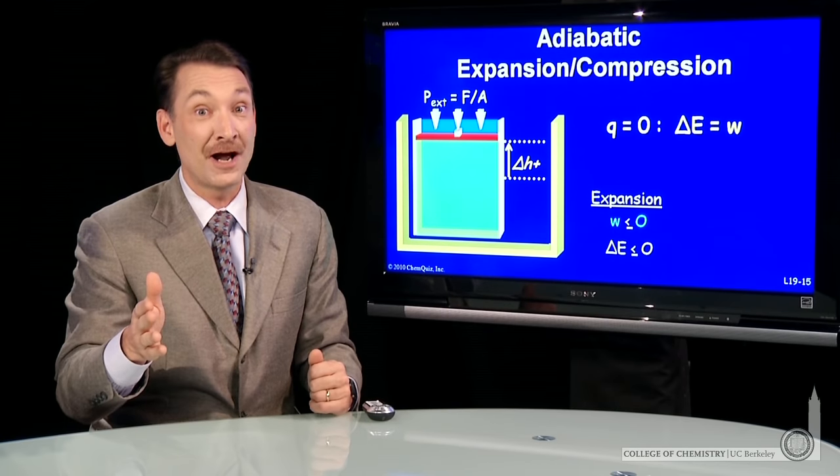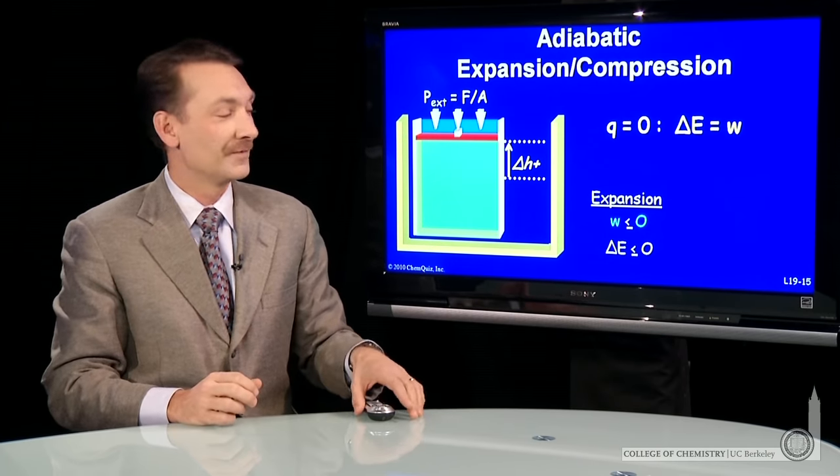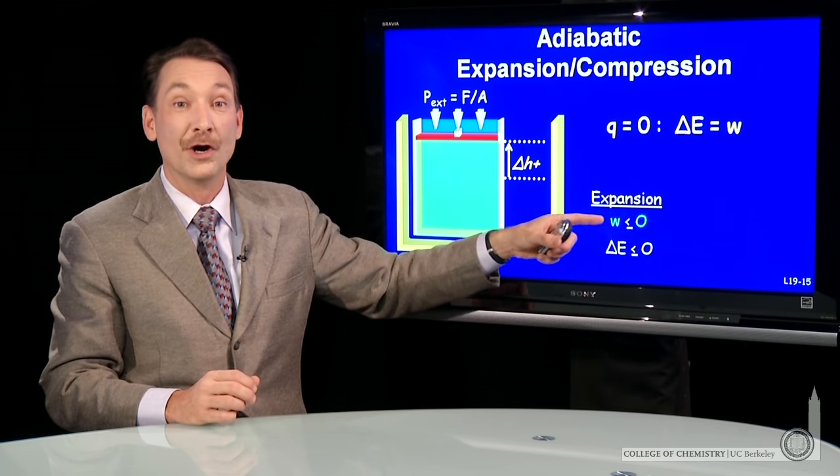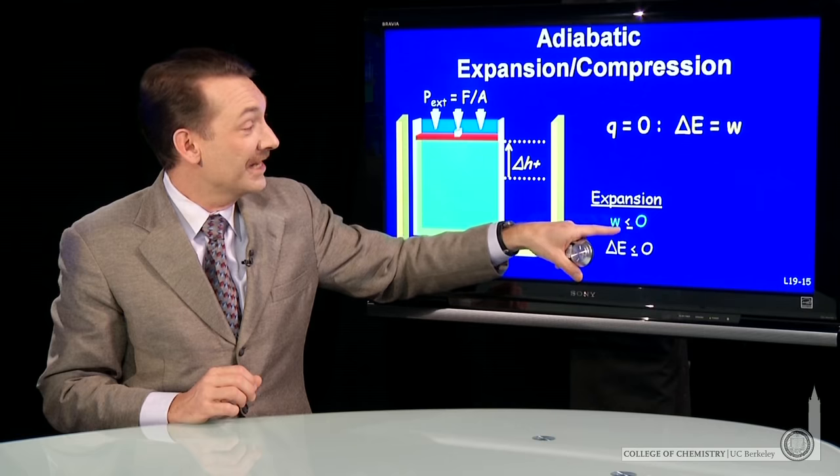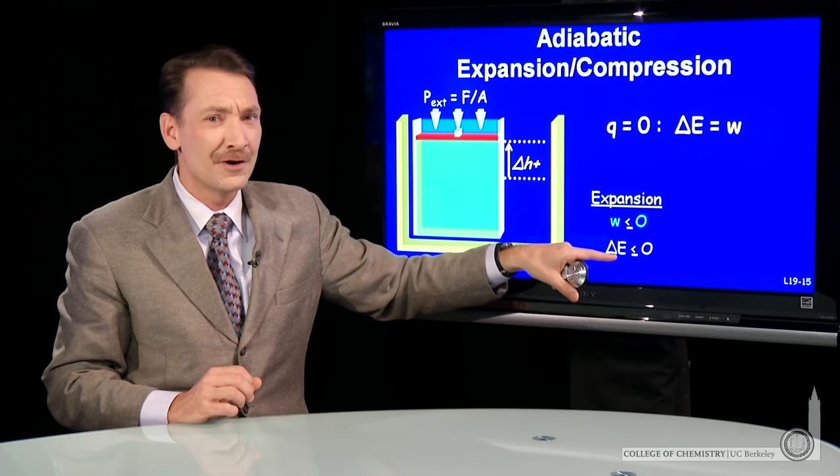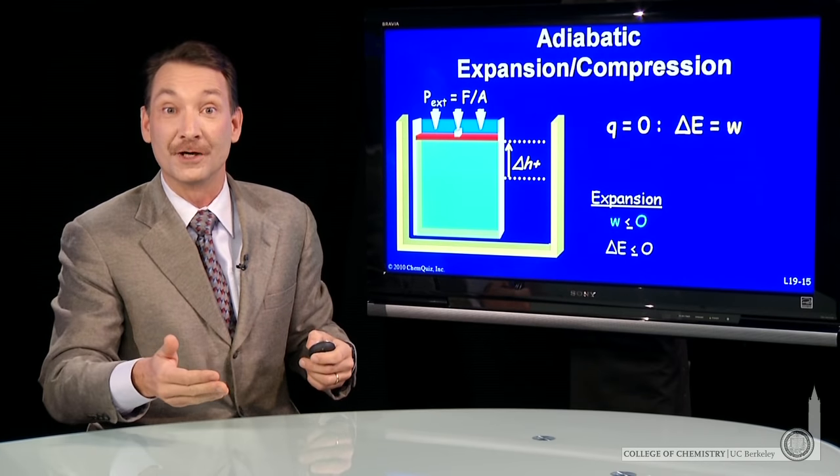And for an ideal gas, if the energy drops, the temperature drops. So ideal gas is expanding adiabatically. Work is negative, and the change in energy is negative. It could also be zero because I could expand against a vacuum and not have to do work.